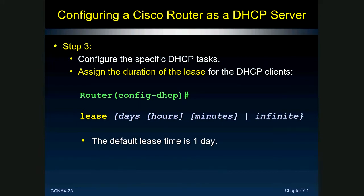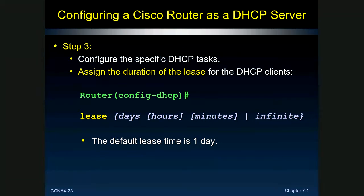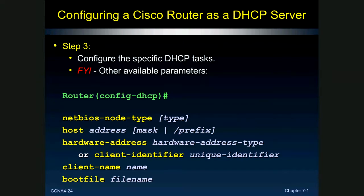By default the DHCP lease duration is one day. You can increase it — two weeks is a good option — to reduce network traffic since machines won't need a new address every day. After two weeks, addresses from machines that are no longer in use are returned to the pool. Even executives who go on three- or four-week vacations will simply get a new address when they return — they won't notice any difference. This helps clean up your address pool when positions are eliminated. There are 20 or 30 additional configurable parameters available in DHCP.